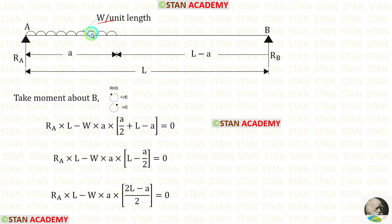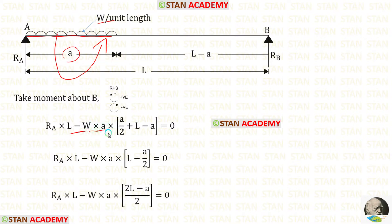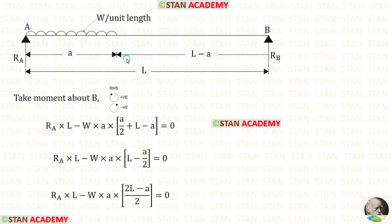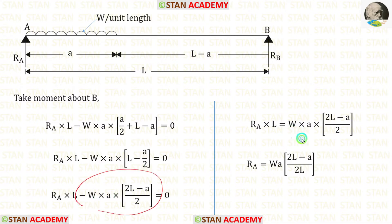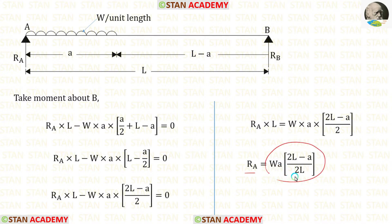The UDL is acting in the anti-clockwise direction, so it will be negative. The UDL is acting for the distance of A, so we have to multiply with A. We open a bracket and take half of this distance, so A upon 2, then add the remaining distance, plus L minus A. A upon 2 minus A gives minus A upon 2. Taking LCM of 2, we get 2L. Taking L to the right side in the denominator, finally we have the expression for RA which is equal to WA into (2L minus A) upon 2L.